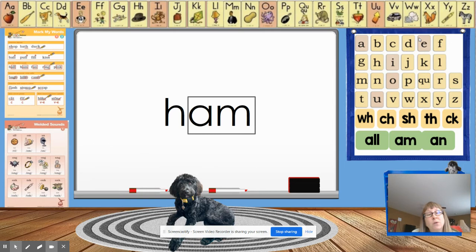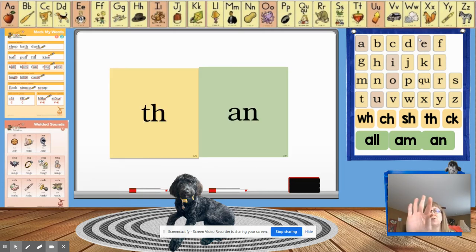We're going to make some more words using our glued sounds. We're going to tap them out. Okay, so everybody get your hands up. Tap with me. Th, an, than. I am shorter than my little brother. Than, it's when you're comparing two things.